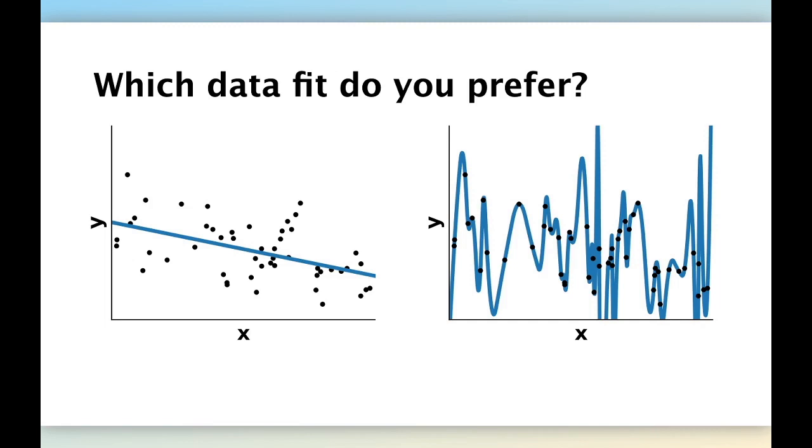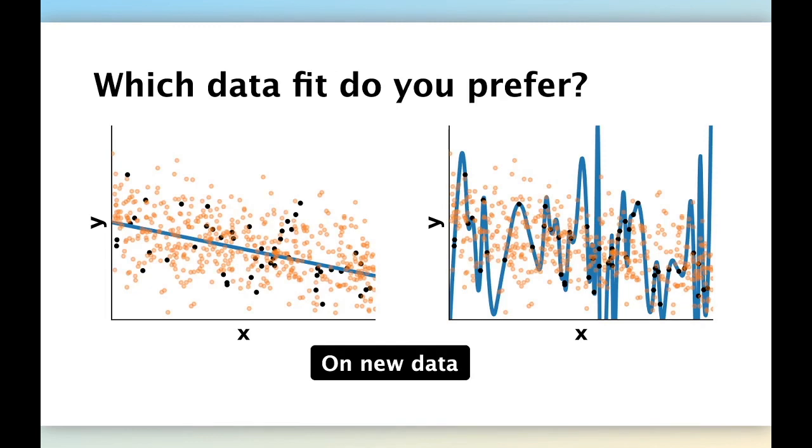So how do we judge actually that this is better than this? The answer comes from using new data points. Here we display as orange data points the values of observations that we kept for the test set. Those are points that come from the same generative process as the training set, but they were held back just for evaluating the quality of the model.